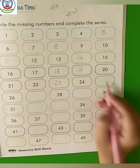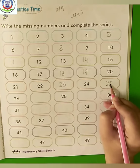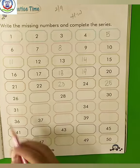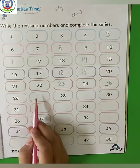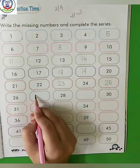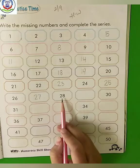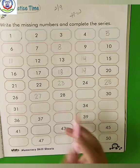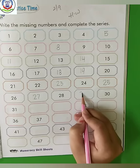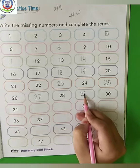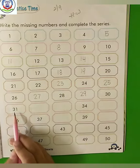After 22, what will come? 20 plus 3, 23. Then 20 plus 4, 24. 20 plus 5, 25. 20 plus 6, 26. After 26? 20 plus 7, 27. 20 plus 8, 28. Then what will come? 20 plus 9, 29. 20 plus 10, 30.